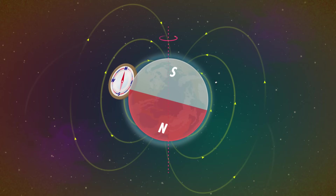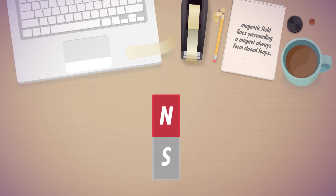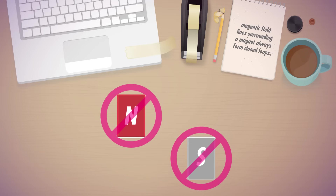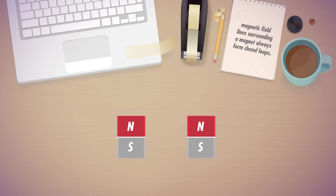Just as we use electric field lines to represent the electric field created by charges, we can draw magnetic field lines to represent magnetic fields created by magnets. And as with electric fields, the more crowded the lines are, the stronger the magnetic field. The lines point from the north pole to the south pole, like how electric field lines point from the positive to the negative charge. But there's a key difference: you can have an electric field spreading outward from a single electric charge, but that can't happen with magnets, because you can't isolate one magnetic pole. If you chop a bar magnet in half, you don't end up with one north magnet and one south magnet – you end up with two magnets, each with its own north and south pole. This means that the magnetic field lines surrounding a magnet always form closed loops.